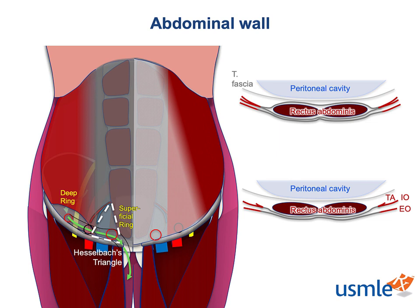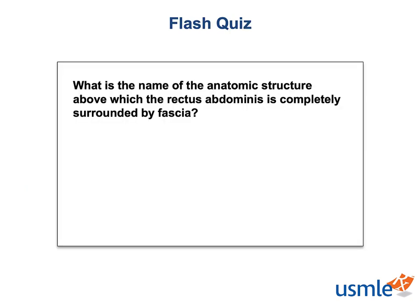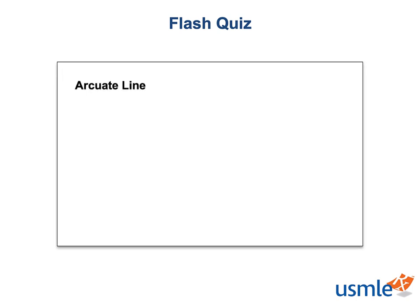For more on that, check out the specific section on the inguinal region and the section on hernias. But now it's time for a flash quiz. What is the name of the anatomic structure above which the rectus abdominis is completely surrounded by fascia? The answer is the arcuate line. Superior to the arcuate line, the rectus sheath has an anterior and a posterior component, but inferior to the arcuate line, there's only an anterior component.